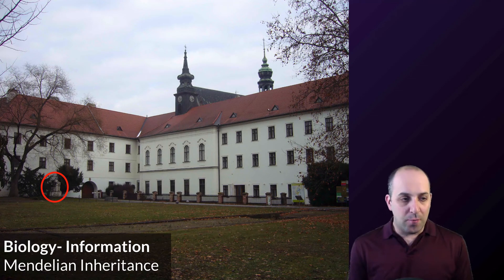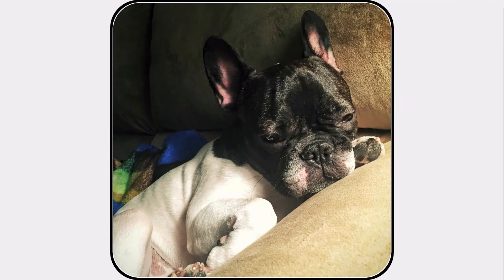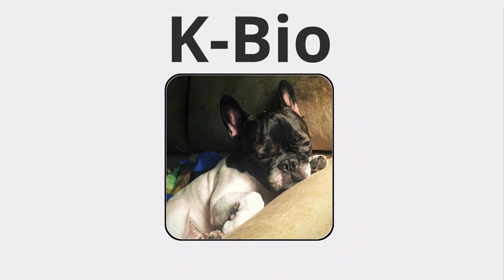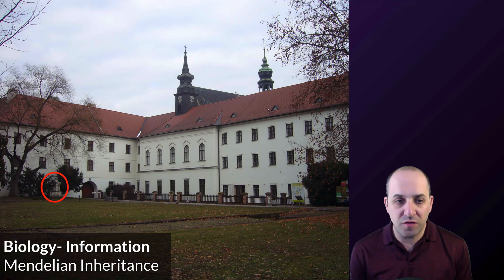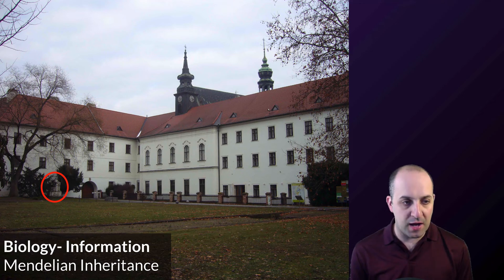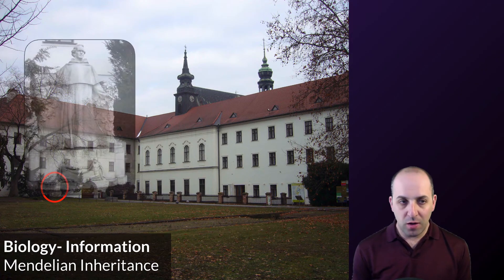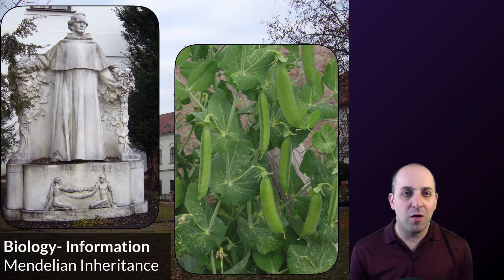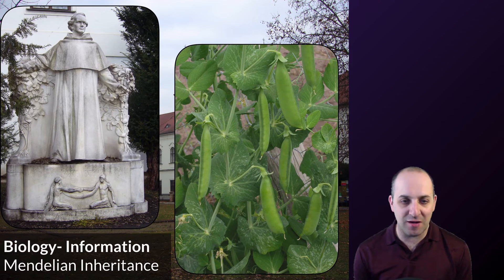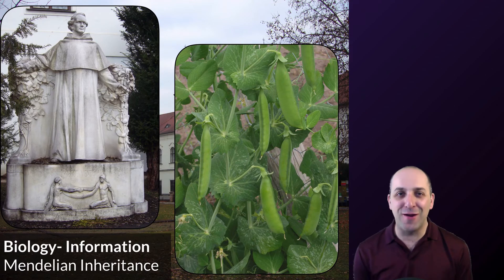Hi, and welcome to our video on Mendelian inheritance here in our information unit. This is a monastery, and I have circled a little statue in the corner there. If we blow him up — there he is! Yes, it's the one and only Gregor Mendel, who did work on peas at this monastery, and is immortalized in a statue on the monastery grounds. So he must have done something important — let's figure out what he did.